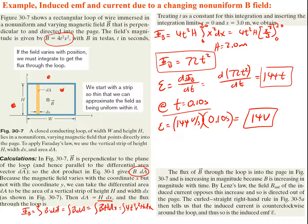The flux of the magnetic field through the loop is into the page and increasing in magnitude because B increases with time. By Lenz's law, the induced magnetic field of the induced current opposes this increase and so is directed out of the page. The curled right-hand rule then tells us the induced current is counterclockwise — we curl our fingers so that B_induced points out of the page.